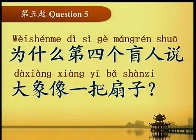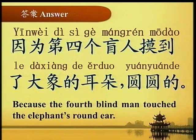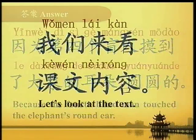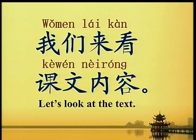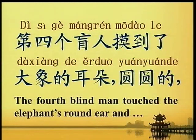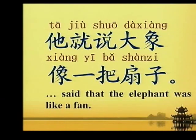为什么第四个盲人说大象像一把扇子？ Why did the fourth blind man say the elephant was like a fan? 答案：因为第四个盲人摸到了大象的耳朵，圆圆的。 Because the fourth blind man touched the elephant's round ear. 我们来看课文内容：第四个盲人摸到了大象的耳朵，圆圆的，她就说大象像一把扇子。 The fourth blind man touched the elephant's round ear and said that the elephant was like a fan.